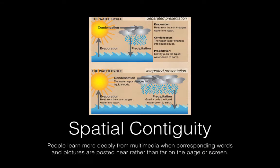The third principle is the spatial contiguity principle, which states that people learn more deeply from multimedia when corresponding words and pictures are posted near rather than far on the page or screen. Here are two examples: there's a diagram with very simple labeling and some explanation on the right at the top half, while the bottom half shows the terminology with descriptions right there next to the pictures. So the bottom half would be a good example of spatial contiguity being adhered to correctly.